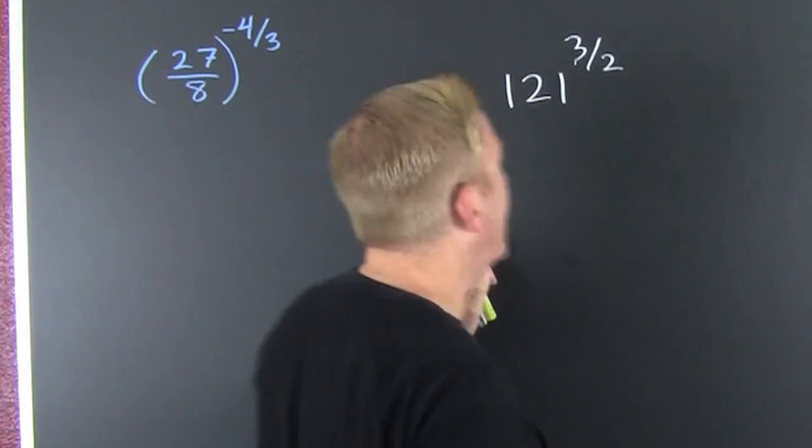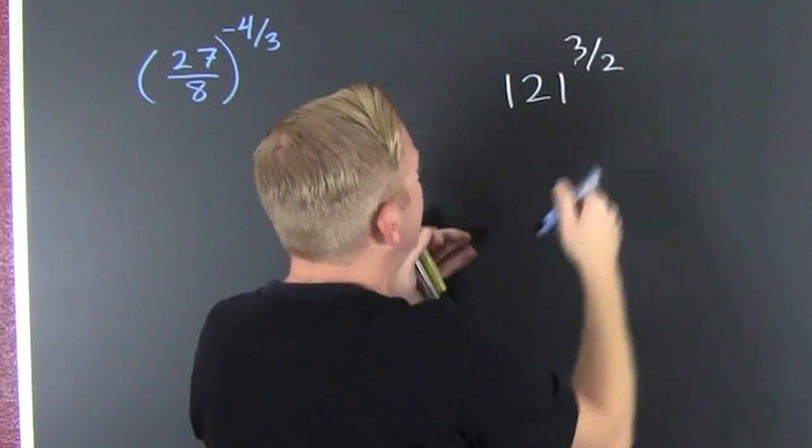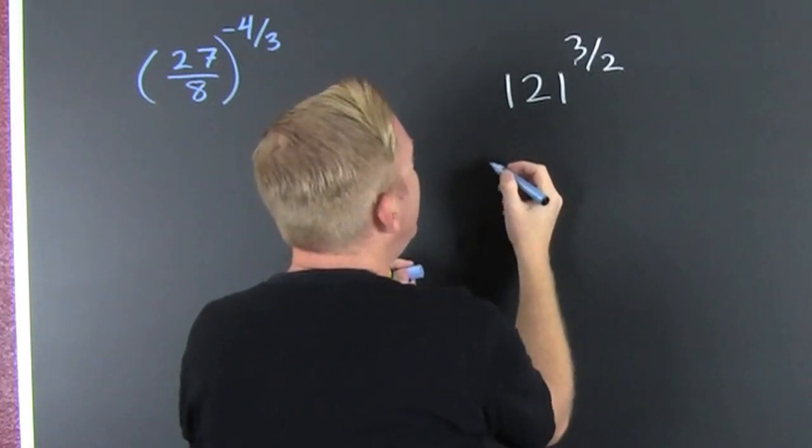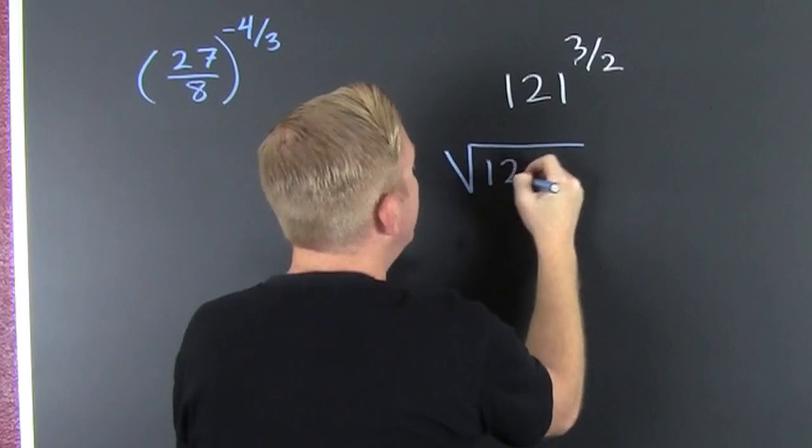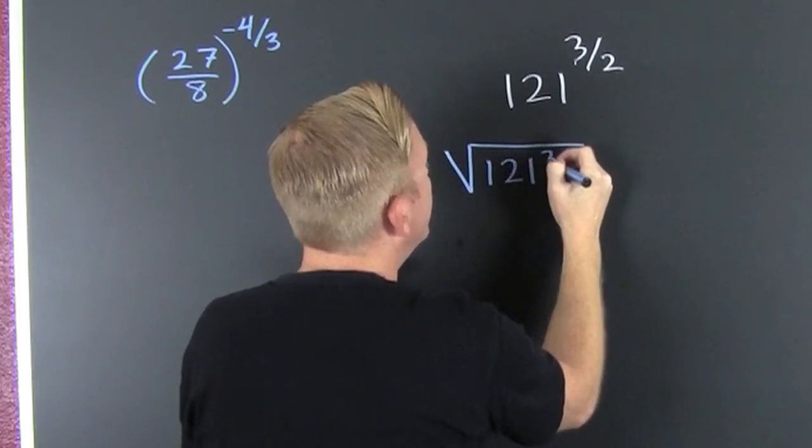So if we see this guy, this is 121 to the 3 halves, then I have one of two things. I have the square root of 121 to the 3rd, or...